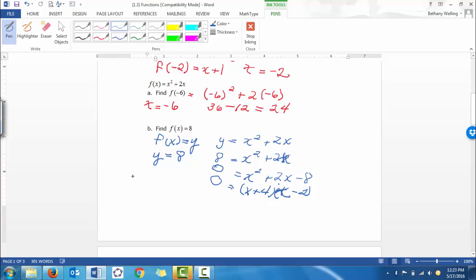And remember we just set each of these equal to 0. So x plus 4 equals 0. So x is equal to negative 4.